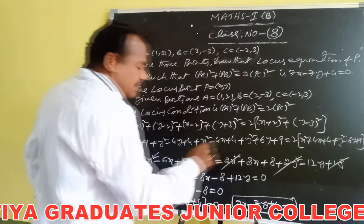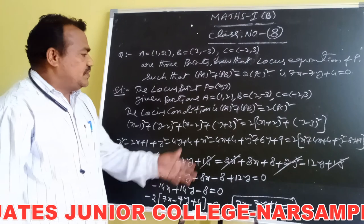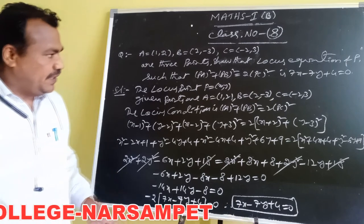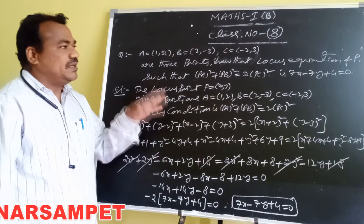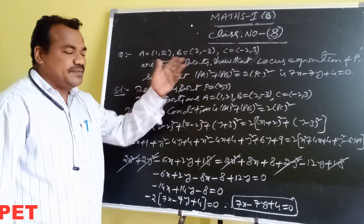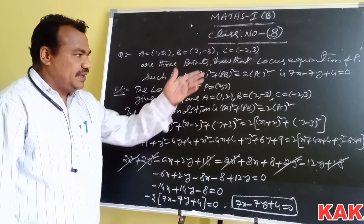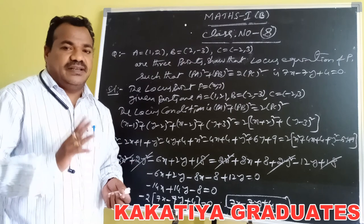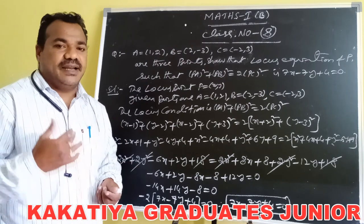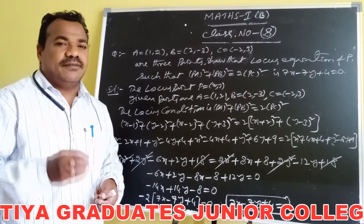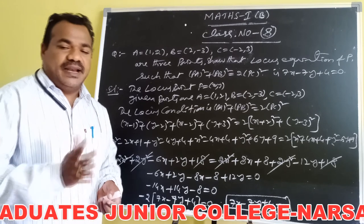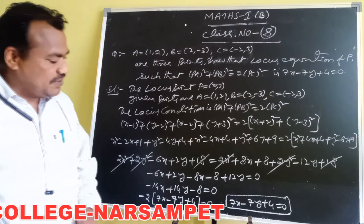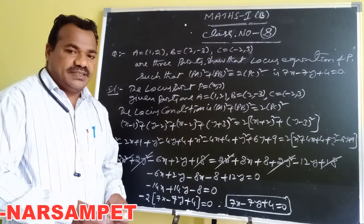The required locus equation of P is 7X minus 7Y plus 4 equals 0, such that PA squared plus PB squared equals 2 of PC squared. To show this, apply the distance formula for PA squared, PB squared, and PC squared, expand all terms, simplify, and we get the required equation 7X minus 7Y plus 4 equals 0.